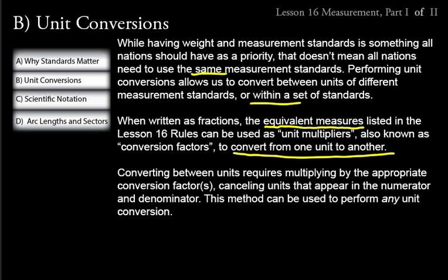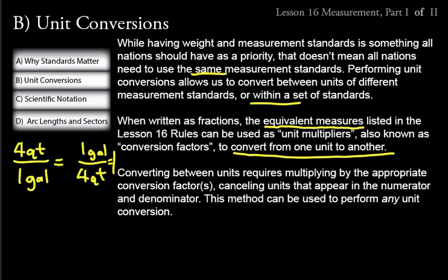We can write conversion factors as fractions. For example, there are four quarts per gallon, which we write as 4 quarts over 1 gallon. We could also write it as 1 gallon over 4 quarts if needed. Both of these fractions are equal to one, because four quarts is the same thing as one gallon — the same thing over the same thing. That ratio equals one.